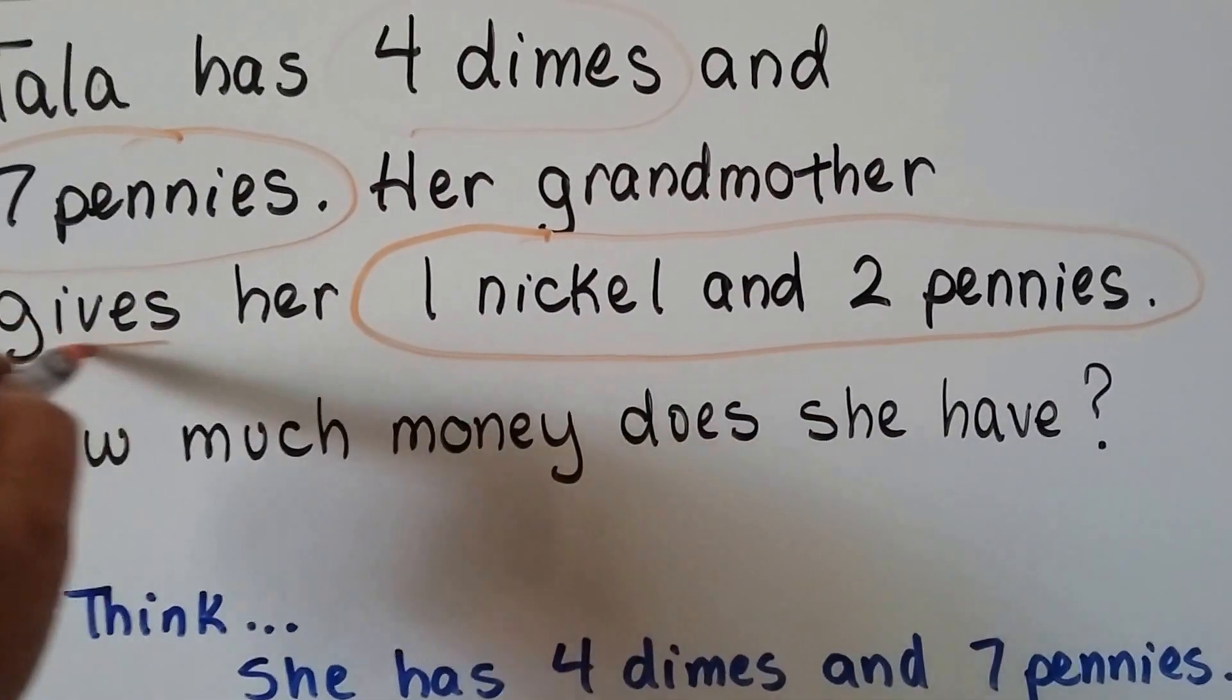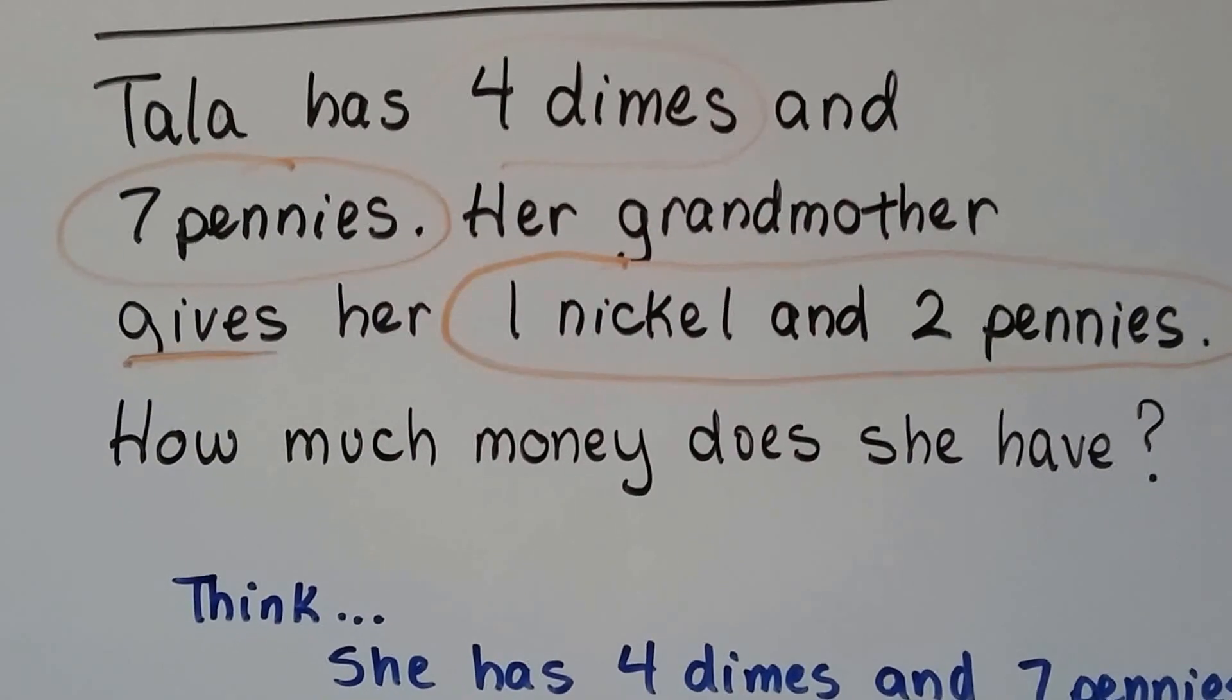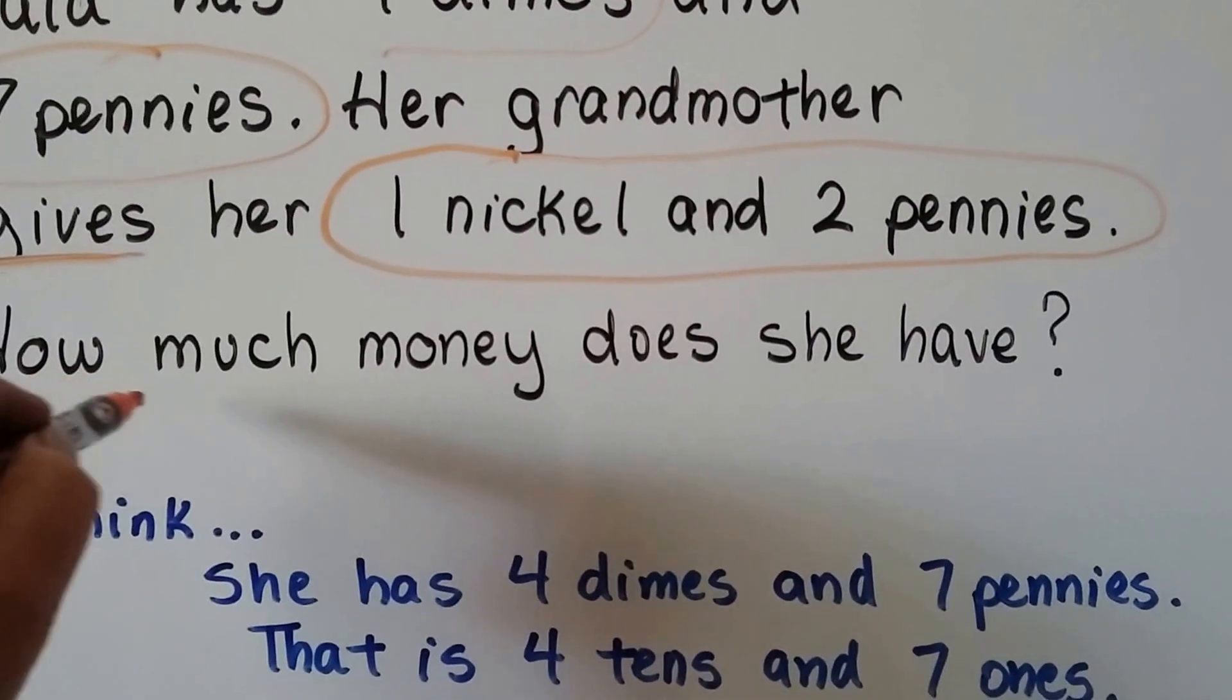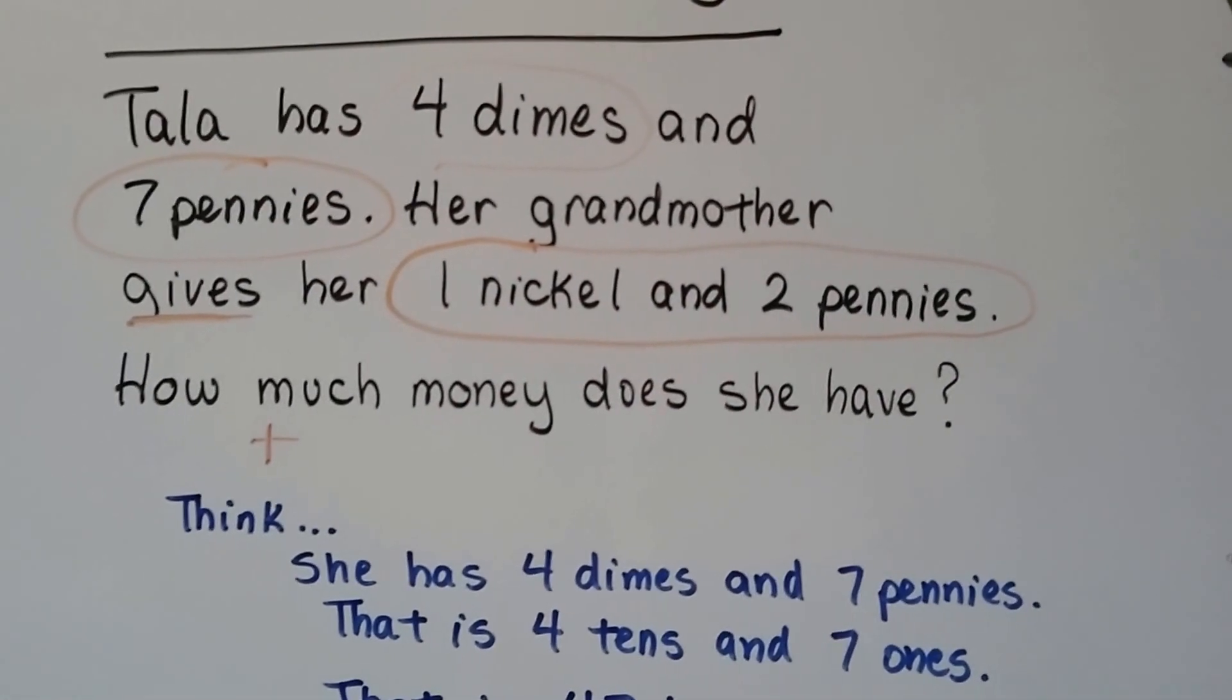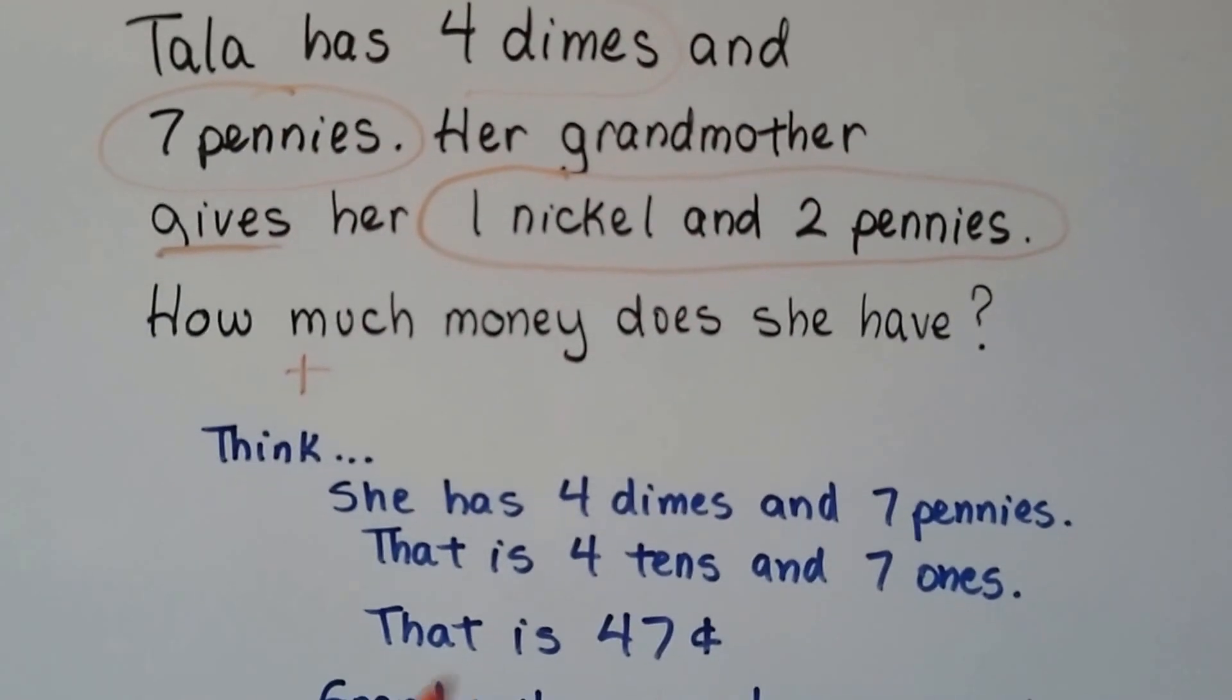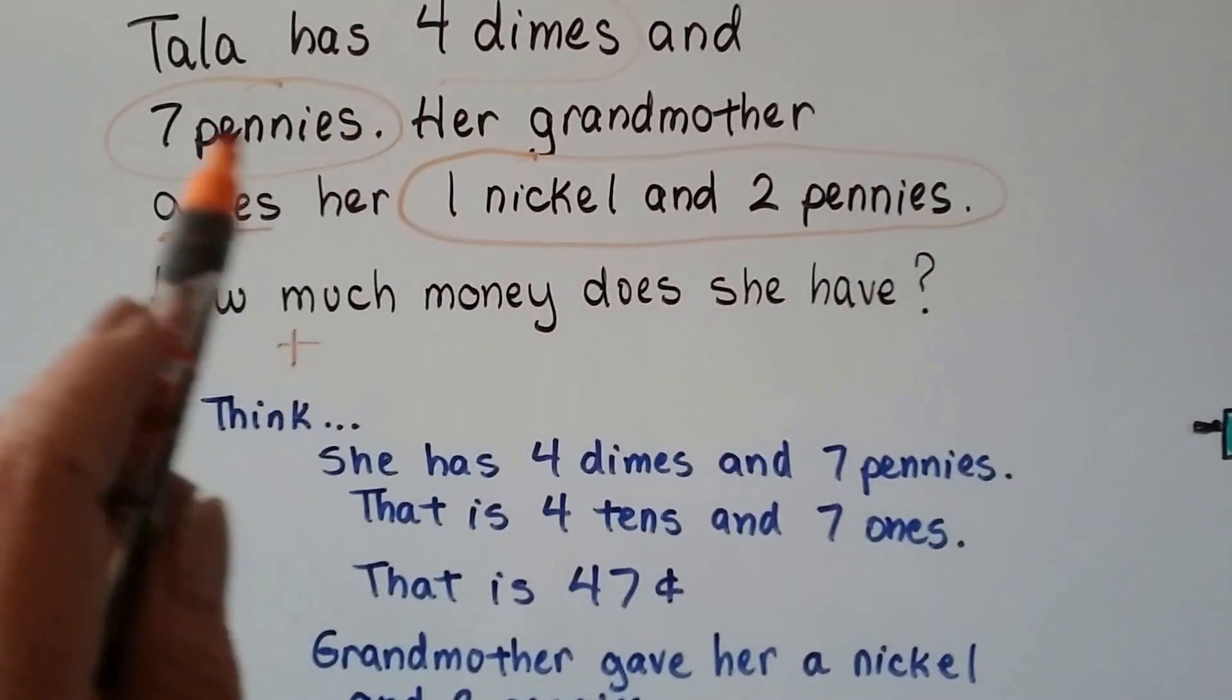Her grandmother gave her a nickel and 2 pennies. Now if her grandmother gives it to her, then she's going to have more, isn't she? And it says, how much money does she have? So this is going to be a plus addition sentence. Okay? It's going to be a plus number sentence because her grandmother gave her more. Okay? So we think, she has 4 dimes and 7 pennies. Right? 4 dimes and 7 pennies.